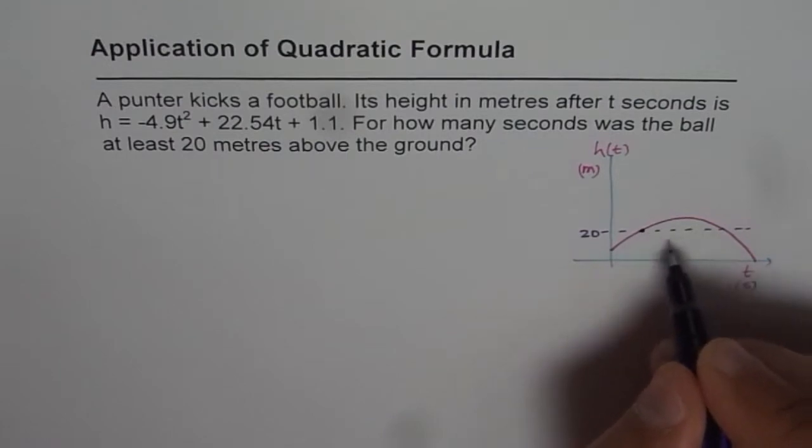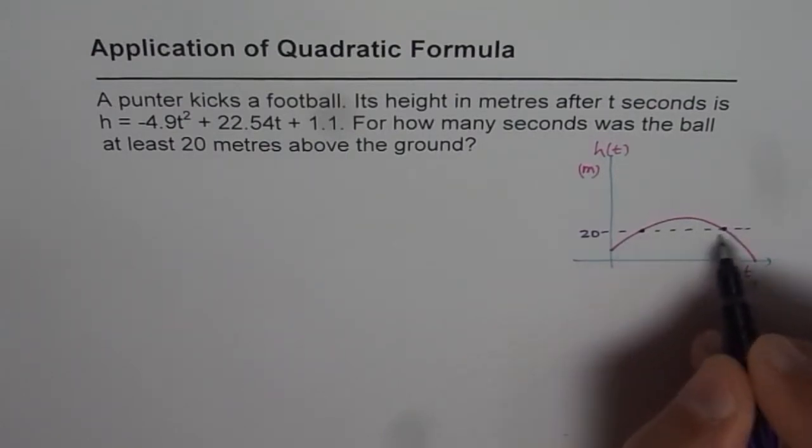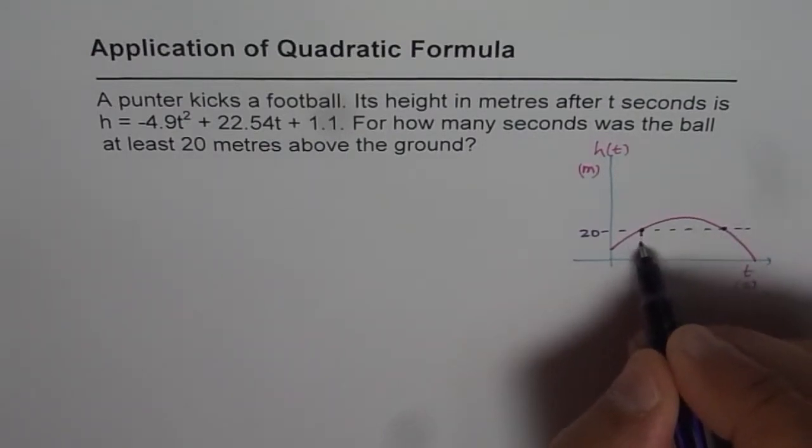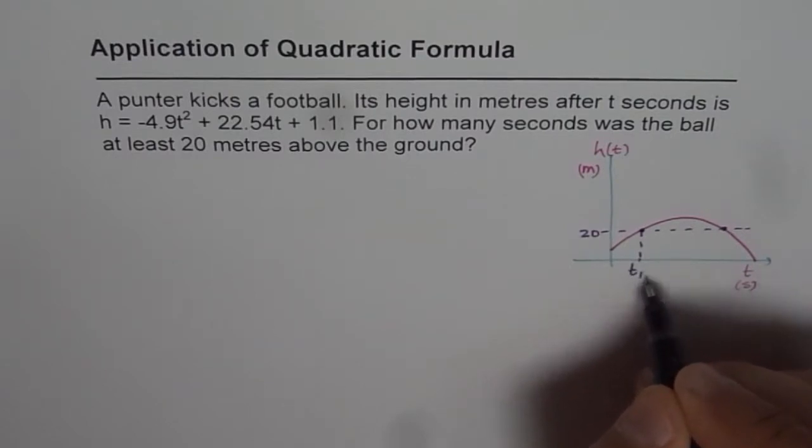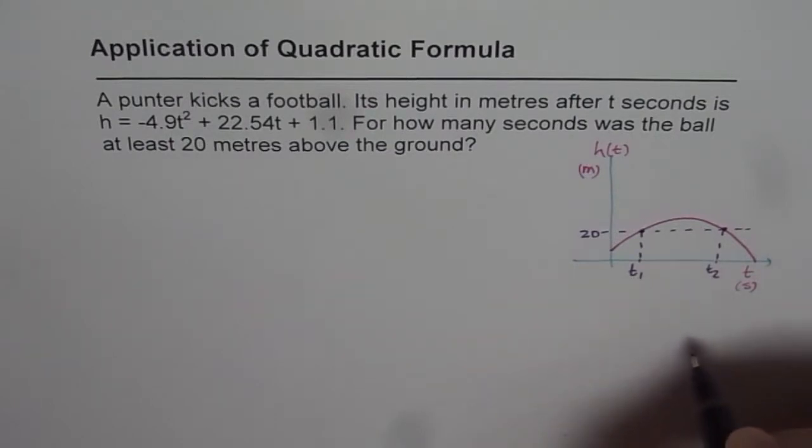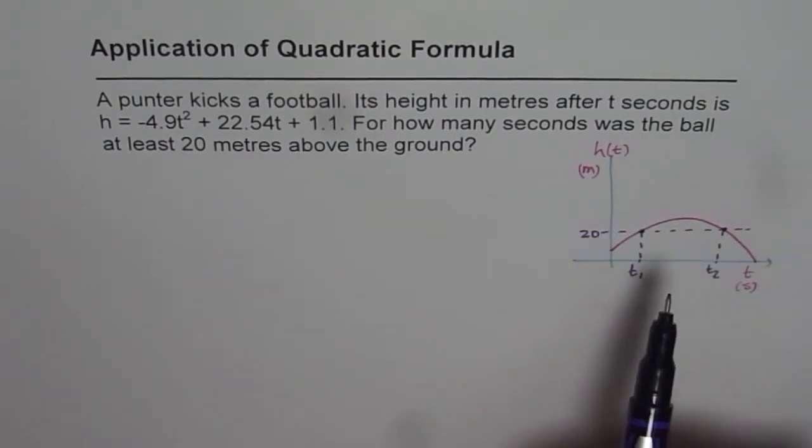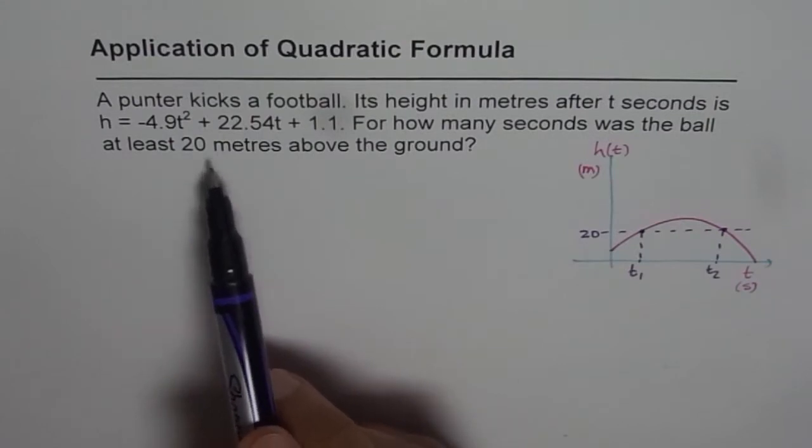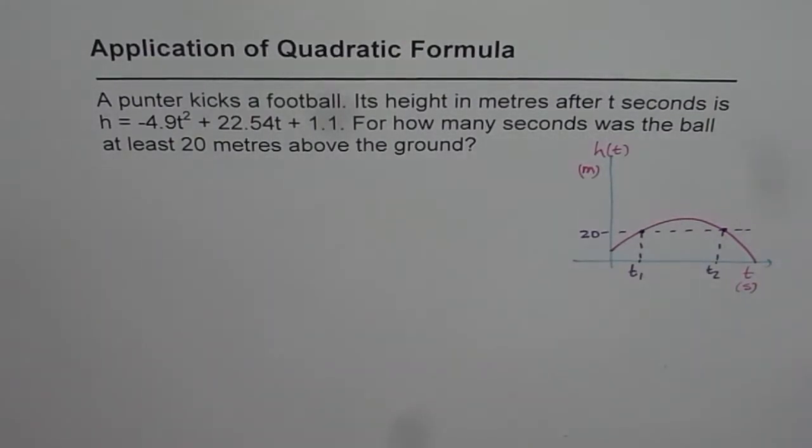So we need to find time when the ball is at 20 meters height. So if you find these two times, t1 and t2, then the duration t2 minus t1 is the time when the ball was at least 20 meters above the ground. So that is the equation. I hope you understand the equation, that is the first part.